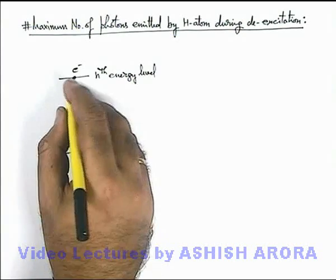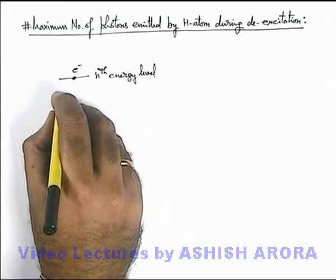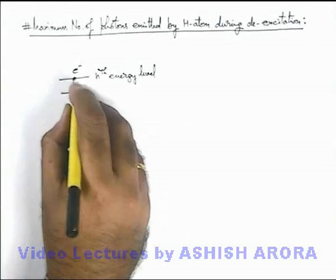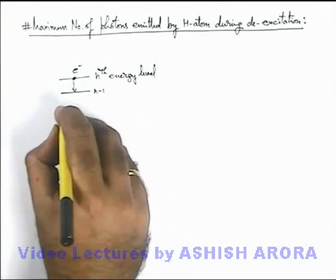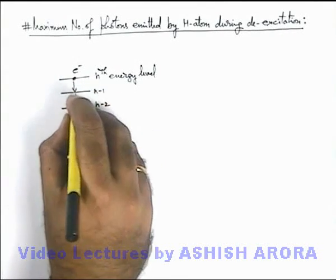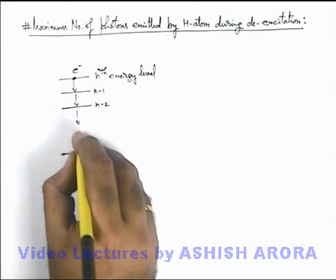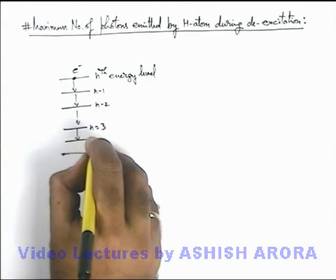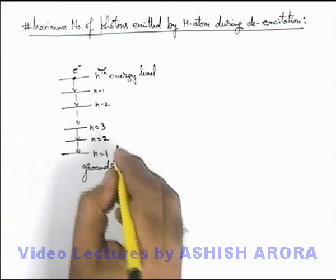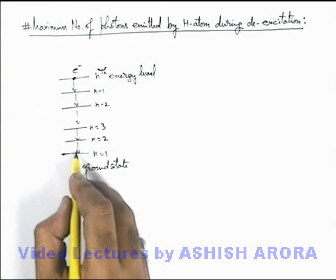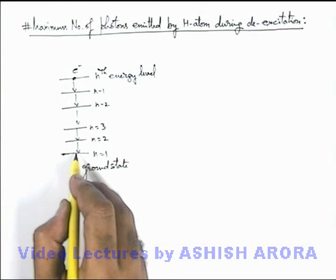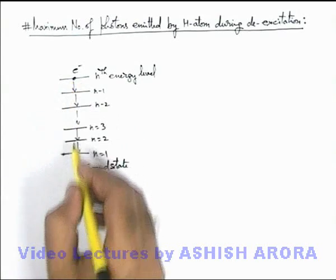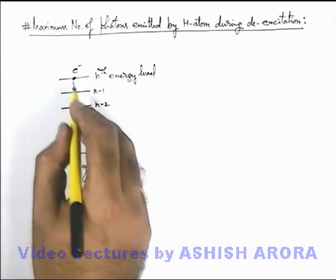So maximum number of photons this electron will emit if it will make a transition just to n minus 1 level, then to n minus 2 level, then so on up to n equal to 3, then n equal to 2, and n equal to 1. Because these are the maximum number of possible transitions which can take place if it is dropping down to ground state just 1 by 1.